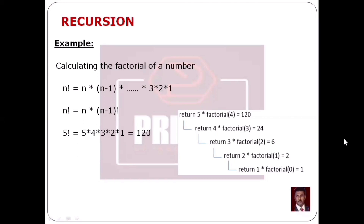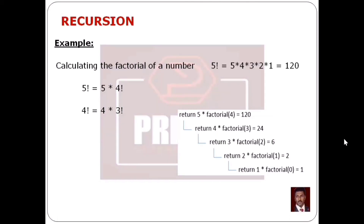We will calculate the factorial recursively. 5 factorial equals 5 into 4 factorial. 4 factorial equals 4 into 3 factorial. This is the factorial formula: n factorial equals n into n minus 1 factorial. Similarly, 3 factorial equals 3 into 2 factorial, 2 factorial equals 2 into 1 factorial, and 1 factorial equals 1 into 0 factorial. So 1 factorial value equals 0 factorial.